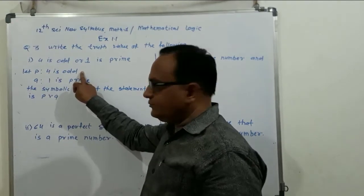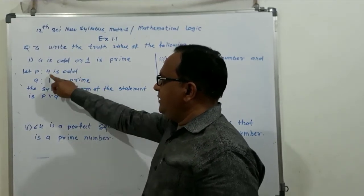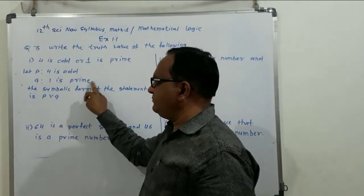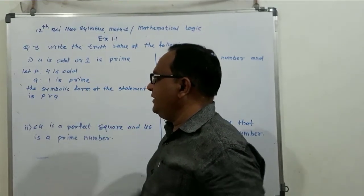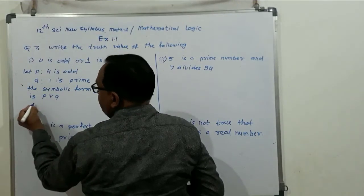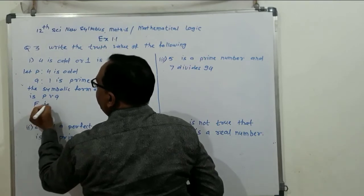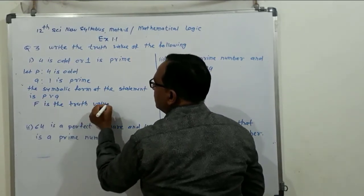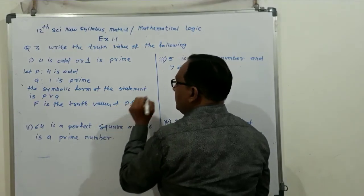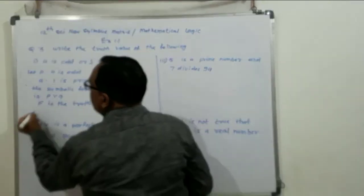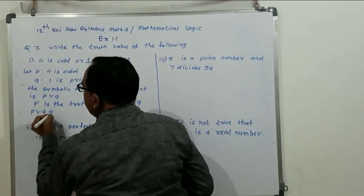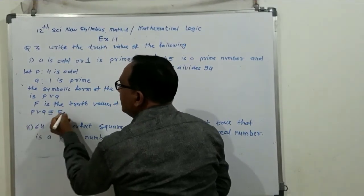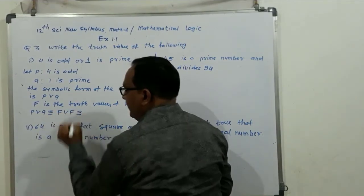Here, 4 is odd, which is false. Hence, the truth value of P is F. And 1 is prime, which is also false. Hence, the truth value of Q is also F. So P is F and Q is F.